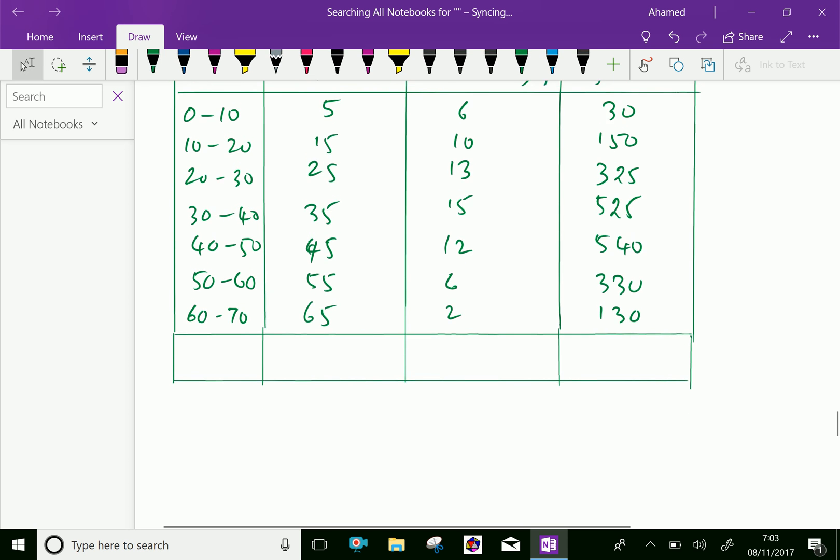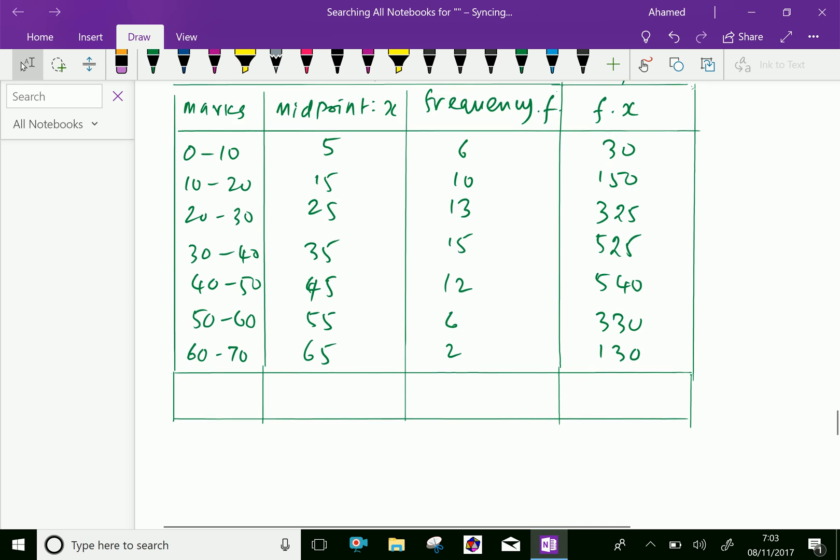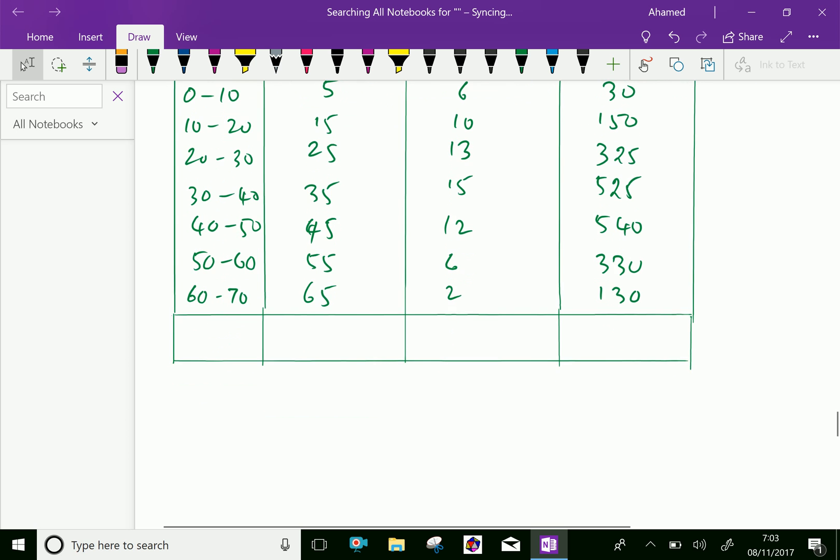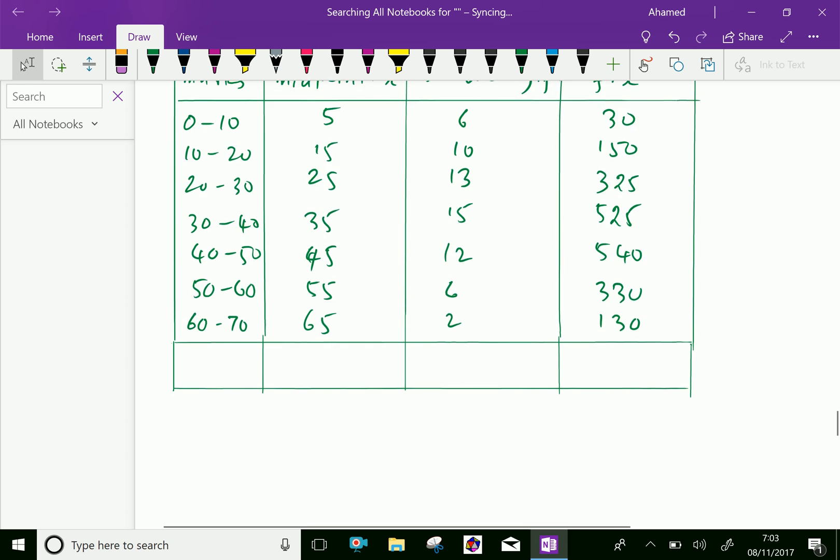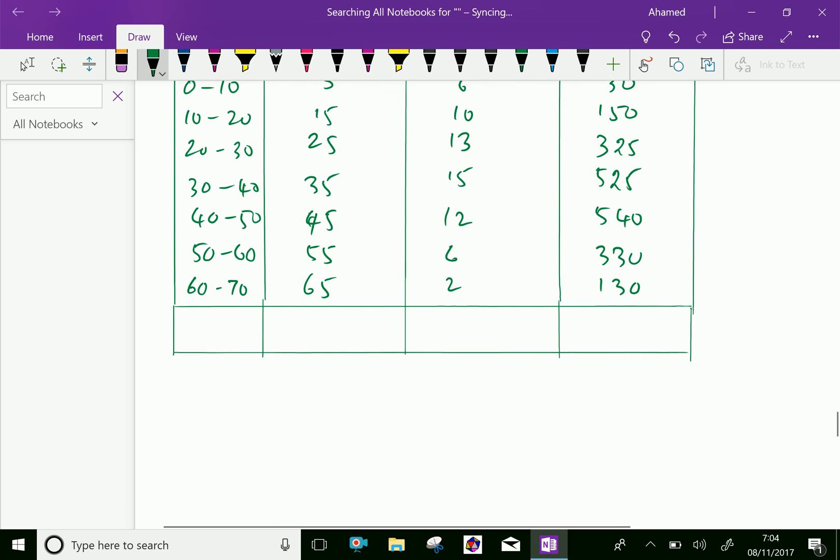Now, let us add the frequency column. Frequency adding is 2 plus 6 is 8, 8 plus 12 is 20, 20 plus 15 is 35, plus 13 is 48, plus 10 is 58, plus 6 is 64.